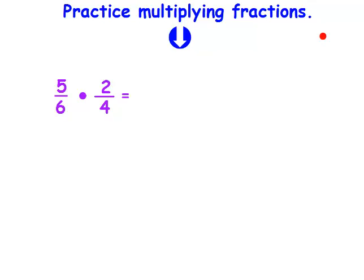5 sixths times 2 fourths. I multiply across. And it's 10 twenty-fourths. But I have to always try and simplify my answer. First, I write the numerator. And here I write the denominator.